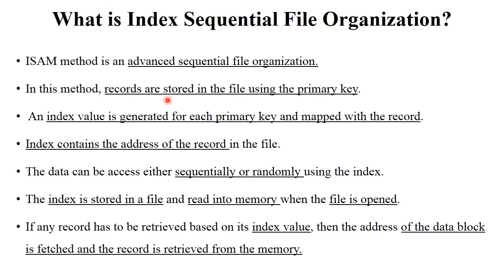In index sequential file organization, records are stored in the file using some unique key or primary key. An index value is generated for each primary key and maps this key with the particular record. The index contains the address of the record in the file. The data can be accessed either sequentially or in a random fashion. In sequential file organization you can only access data sequentially, but in index sequential file organization you can access data both sequentially or randomly.